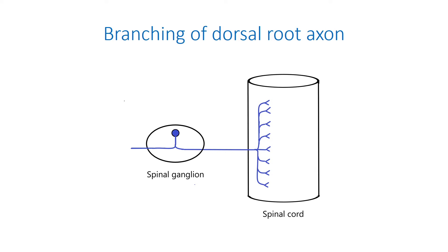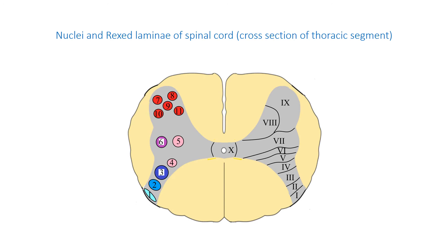The multipolar neurons of the dorsal horns receive afferent nerve fibers from spinal ganglia via the dorsal roots. Each dorsal root axon entering the dorsal horn divides into ascending and descending branches, which in turn produce horizontal collaterals. The branches extend only a few segments at most. Neurons with the same function and accompanying glial cells are grouped forming nuclei, usually depicted as circles or ovals. Swedish neuroscientist Rexed proposed to map them out as segments called Rexed laminae.